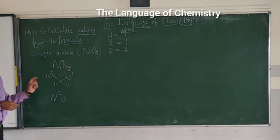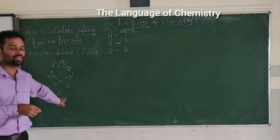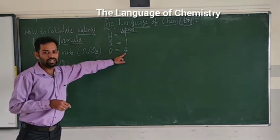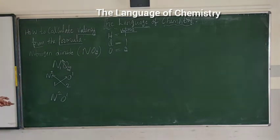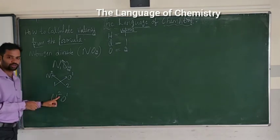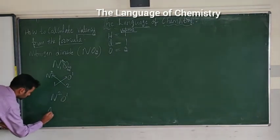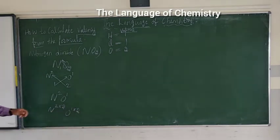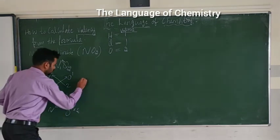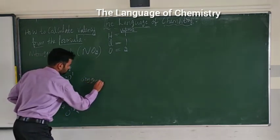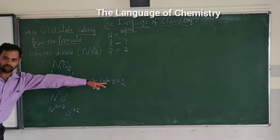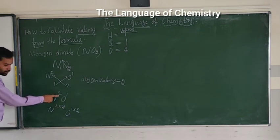So after cross multiplying, the subscript is changed into the superscript. Now we know oxygen valency is 2. In the third step, multiply the oxygen valency (2) to both superscripts: 2×2=4 for nitrogen, and 1×2=2 for oxygen.